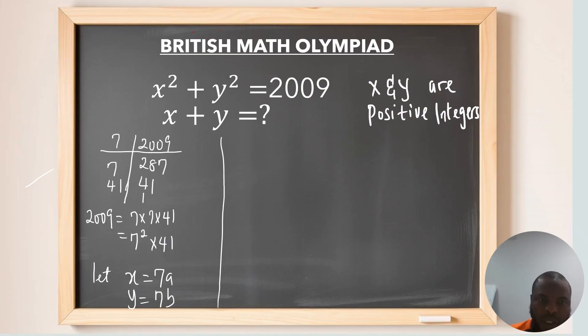From here, recall that we have x squared plus y squared equals to 2009. So, my x is now going to be 7a squared plus my y squared, which is going to be 7b squared equals to 2009. So, my 2009 can be written in this form, which is 7 squared times 41.